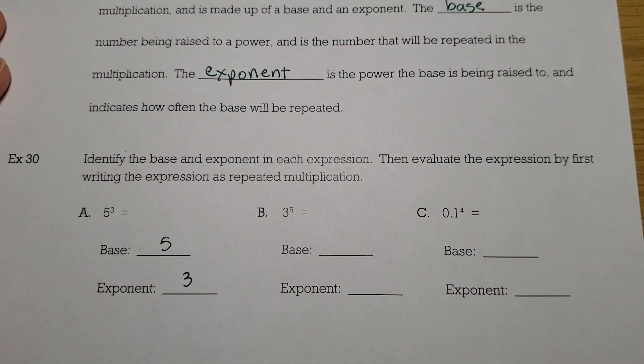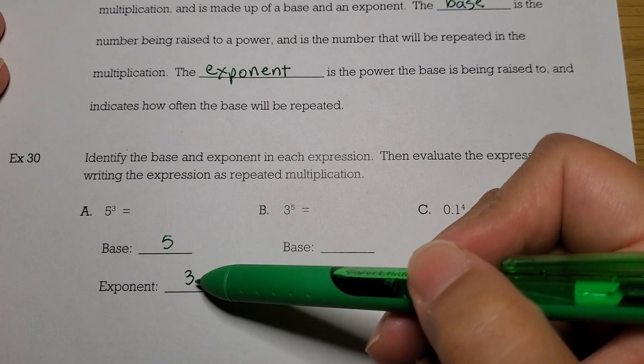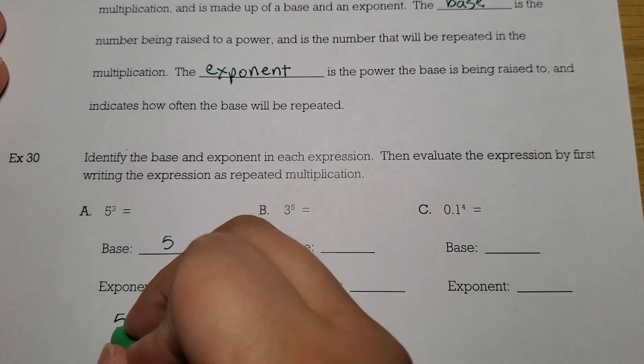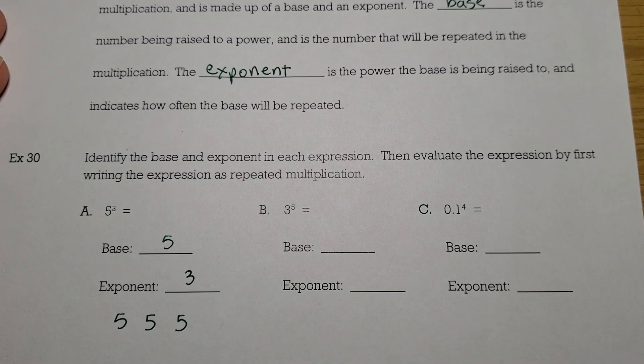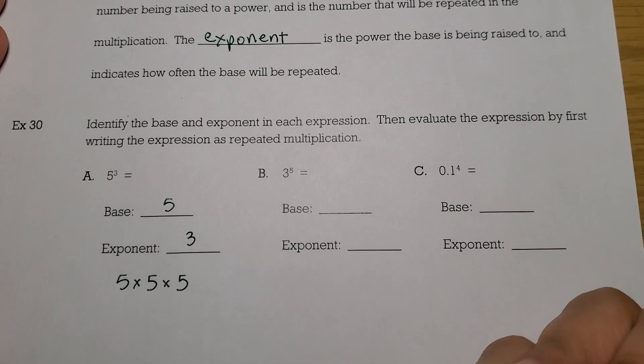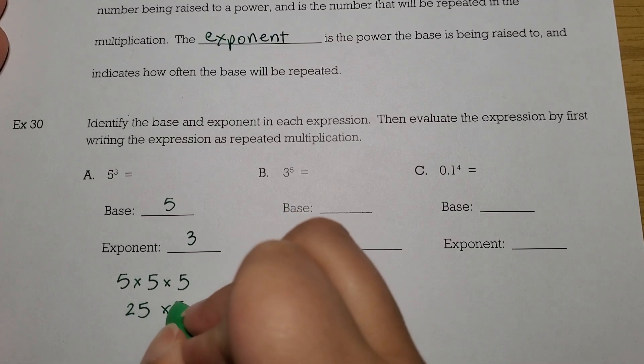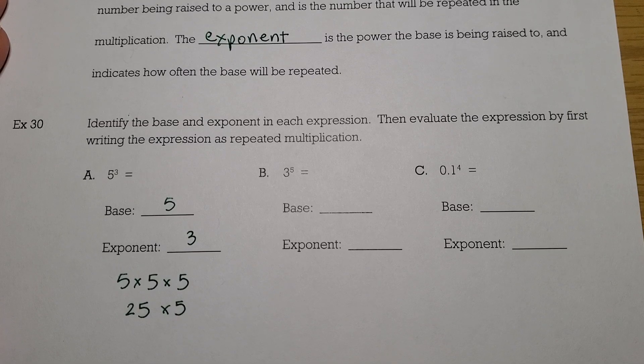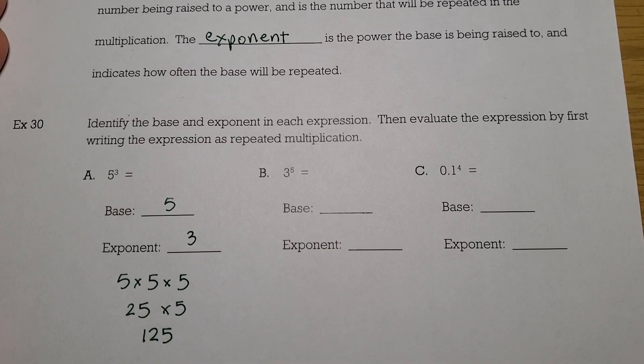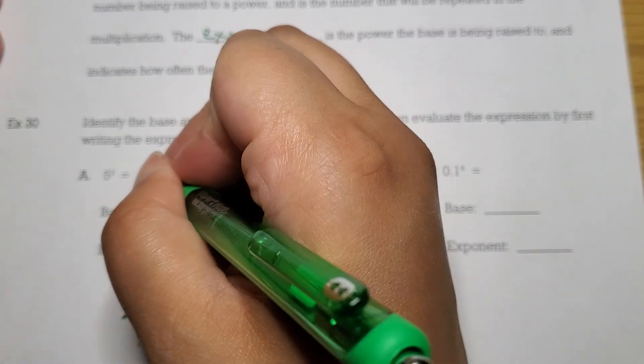And what 5 to the third means is to take the base, and you're going to multiply the exponent many of them. So we're going to take three copies of the base and multiply them together. So 5 times 5 is 25. And 25 times 5 is going to be 125. So this means that 5 to the third power is 125.